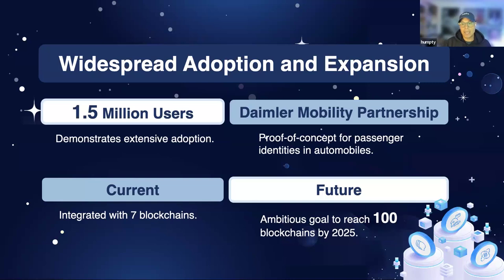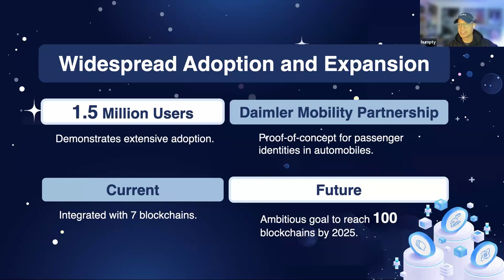OntiD is one of the more widely distributed DIDs on-chain with 1.5 million users. It also has a variety of applications, including a proof of concept with Daimler Mobility, where they created passenger identities for car fleets. OntiD is currently integrated with seven blockchains, with a goal of 100 by the end of next year. I think this is a wonderful opportunity to introduce DID to a blockchain community.